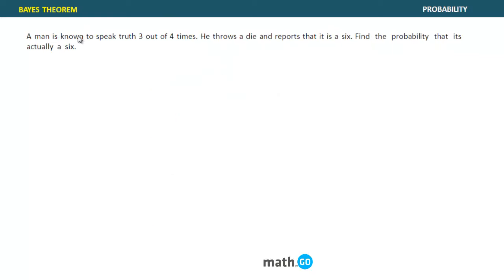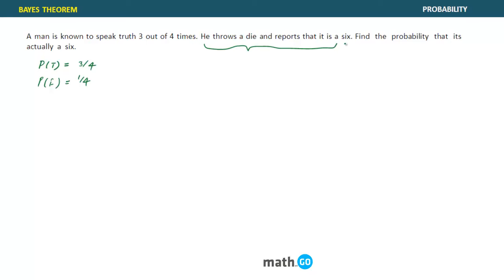Let's take a question on Bayes. A man is known to speak truth 3 out of 4 times. So probability of speaking truth is 3/4, and probability of lying is 1/4. He throws a die and reports that it is a six. Find the probability that it is actually a six.